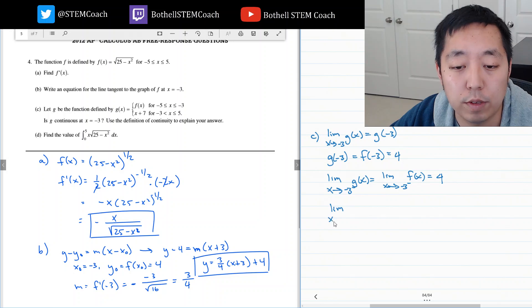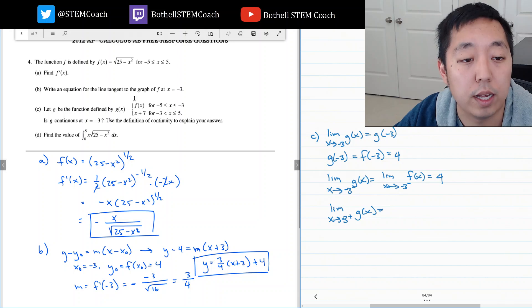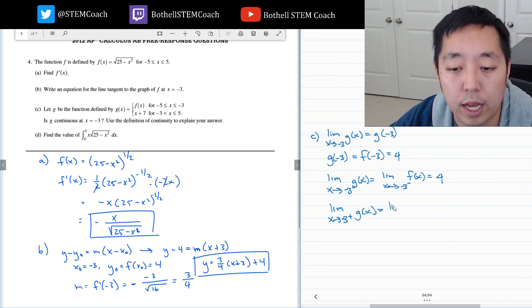And then when I do this limit from the right side. It's negative 3 from the right of g of x. I look at this x plus 7. That's equal to 4.